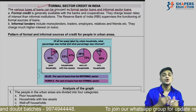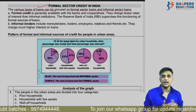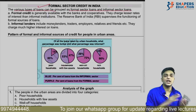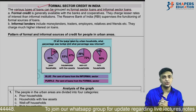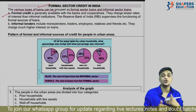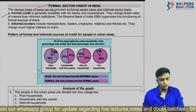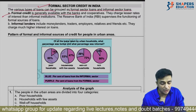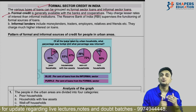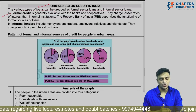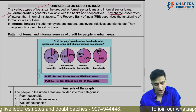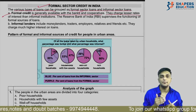The two types of credit are formal and informal. Informal sector sources include friends and money lenders. Formal credit generally comes with documentation requirements and is available through banks and cooperatives. Formal sector credit follows rules and regulations, and banks charge a lesser rate of interest compared to the informal sector.